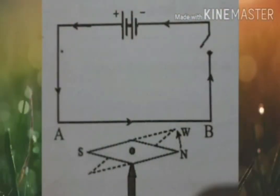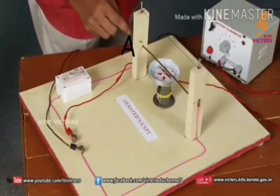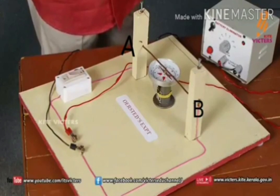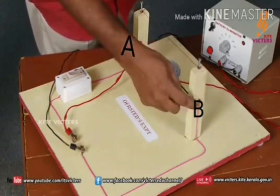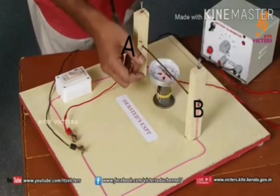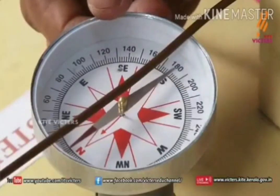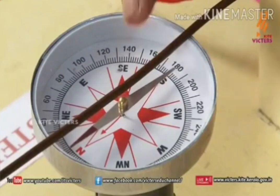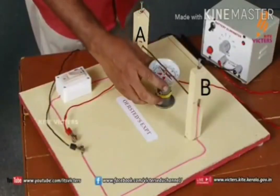Let's try to do an experiment that leads to this conclusion. Arrange a circuit above a pivoted magnetic needle in such a way that the part AB of the conductor is parallel and close to the magnetic needle.